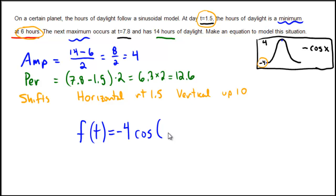We have this period of 12.6, so this is where we get our b value. We take our usual period, which is 2π, and divide by 12.6, the new period. Then we perform our shifts. We have a horizontal shift minus 1.5.